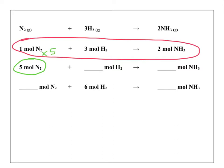Let's do the same thing to the hydrogen and the ammonia. Three times five is 15 and two times five is 10. So using stoichiometry, we can say that 15 moles of hydrogen would be reacted and 10 moles of ammonia would be produced if we had five moles of nitrogen.